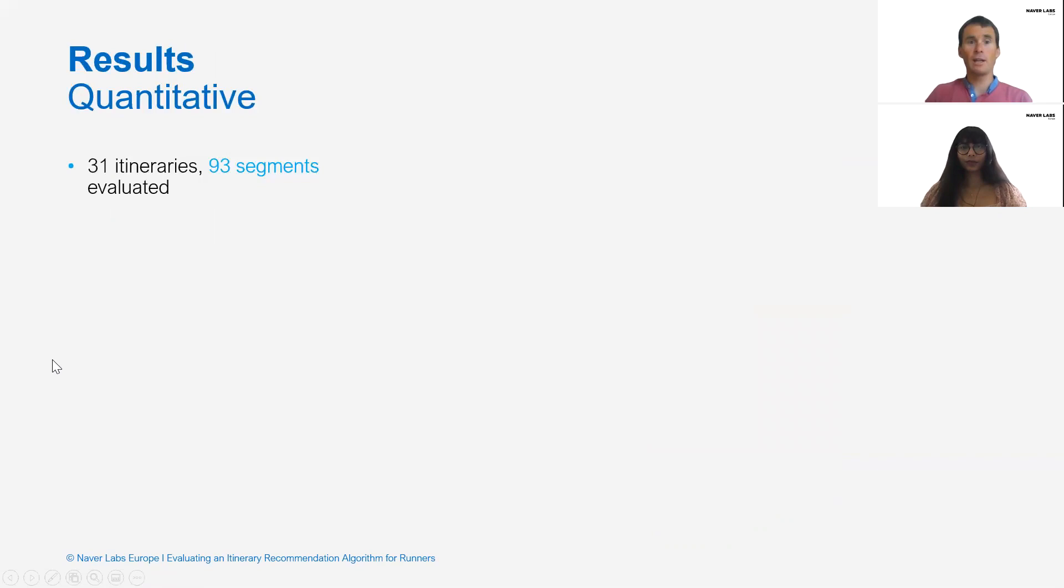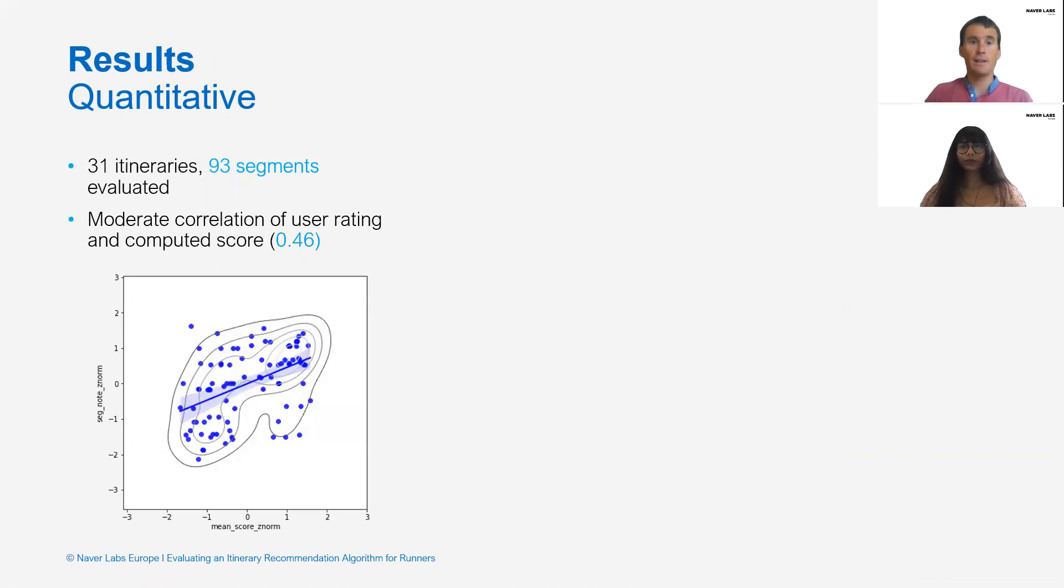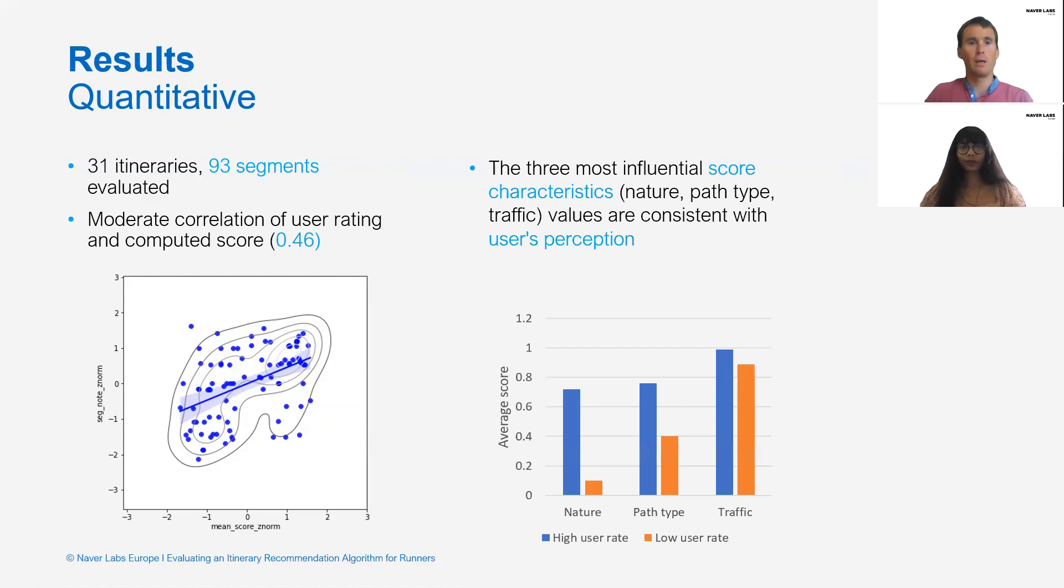31 itineraries were run and 93 segments evaluated. The analysis of the quantitative data showed a moderate correlation of 0.46 between user rating and the computed score by the algorithm. Data also shows that the three most influential score characteristics values are consistent with users' perception.